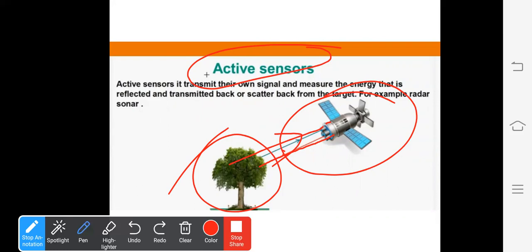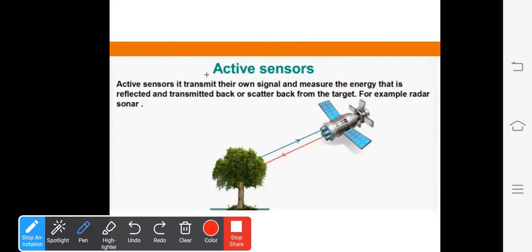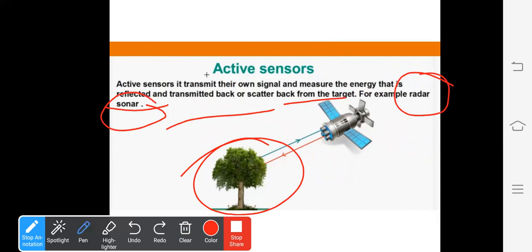Look at the definition. Active sensors transmit their own signal and measure the energy that is reflected and transmitted back or scattered back from the target. What is our target? For example, radar and sonar. Radar and sonar are examples. Thank you.